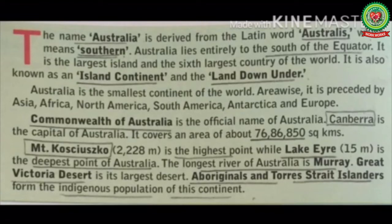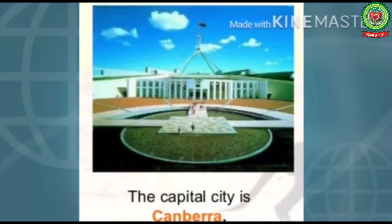Commonwealth of Australia is the official name of Australia. Though Australia is independent, it is connected with the United Kingdom by its language, values, and historical ties. It also shares the values of democracy and human rights, promoted through the Commonwealth Games.